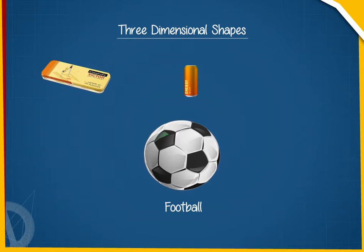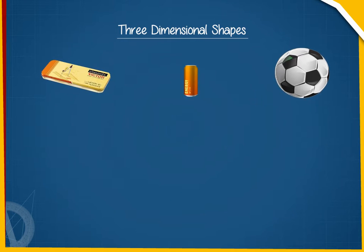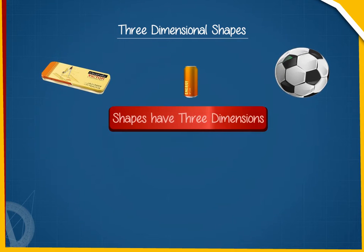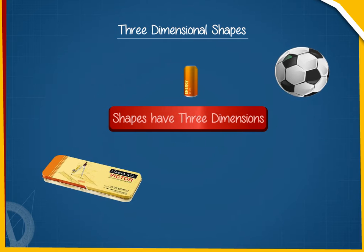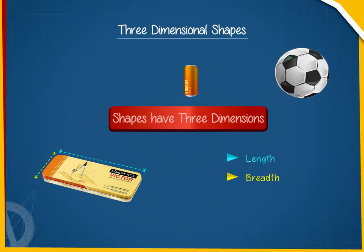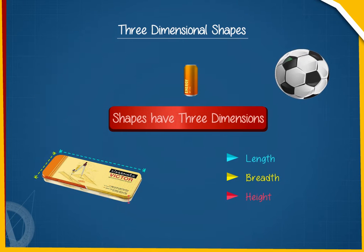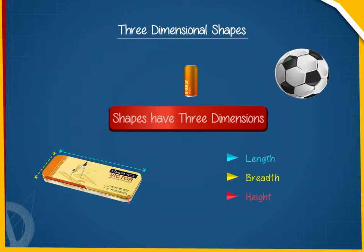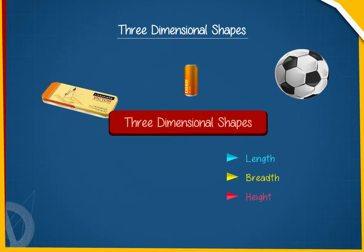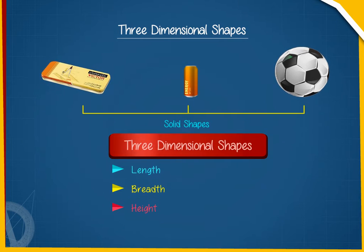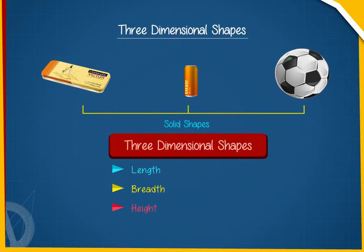Each of these shapes has three dimensions called length, breadth and height. We call such shapes as three-dimensional shapes. They are solid shapes.